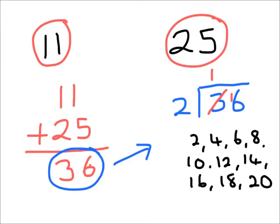Now I ask myself how many twos are in sixteen? One two, two twos, three times two, four times two, five times two, six times two, seven times two, eight times two. And there we've got our answer.